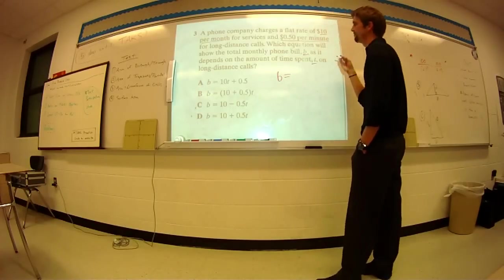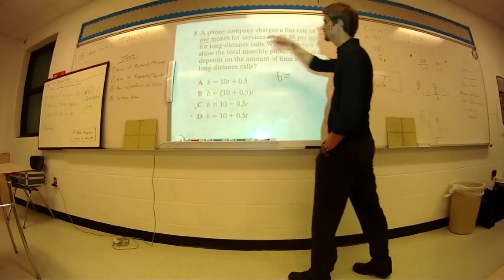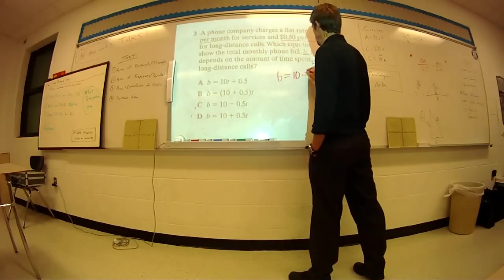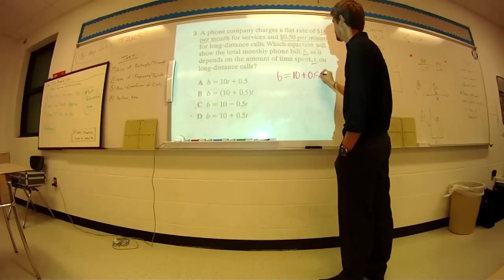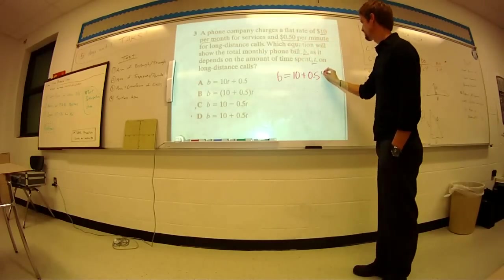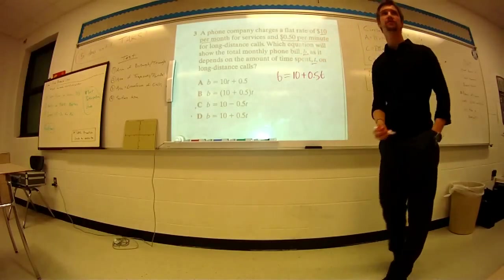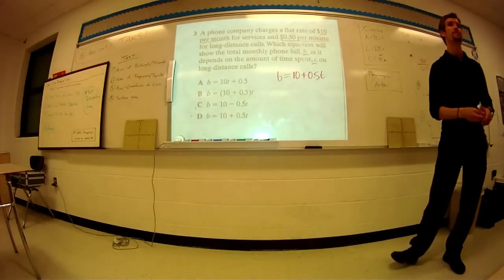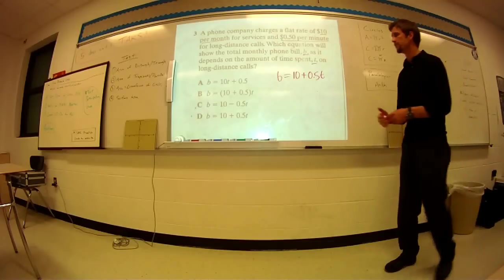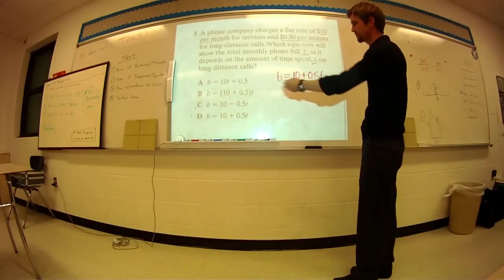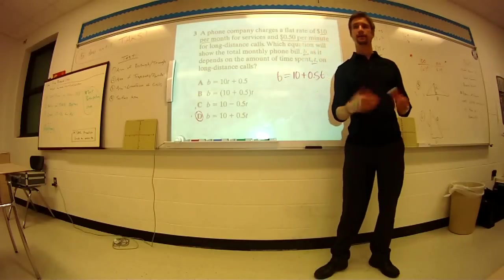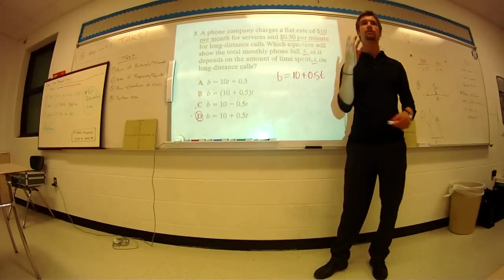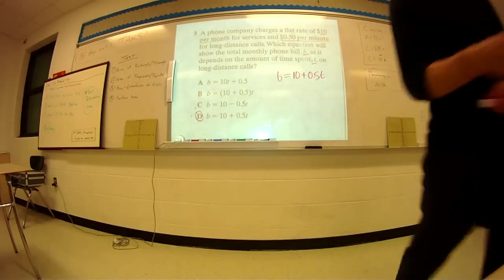So B, you're paying a flat rate, $10 per month, plus how much are you paying per minute? $0.50, so 0.5 times T is the amount that you are paying per minute. So therefore, B equals 10 plus 0.5T, that answer is going to be D. Another pretty simple problem. Now we're going to move on to question number four.